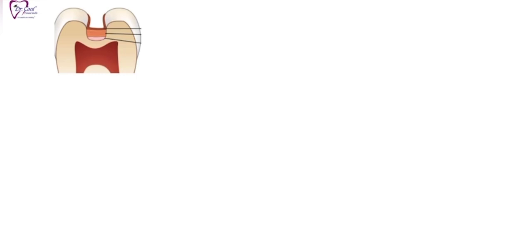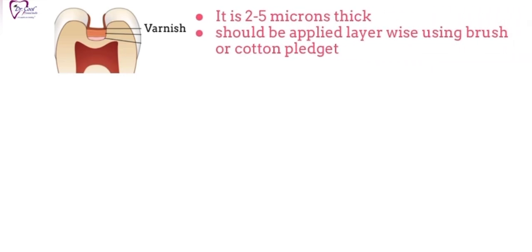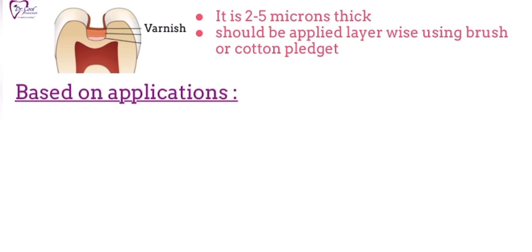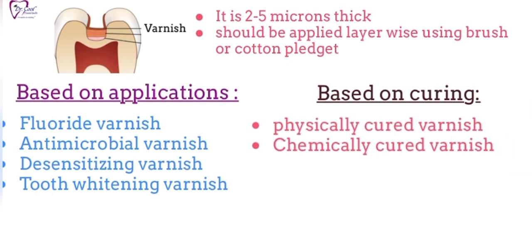Varnishes are usually two to five microns thick and should be applied layer-wise using a brush or cotton pellet. Based on applications, varnishes are of four types: fluoride varnish, antimicrobial varnish, desensitizing varnish, and tooth whitening varnish. Based on curing, they are either physically cured or chemically cured.